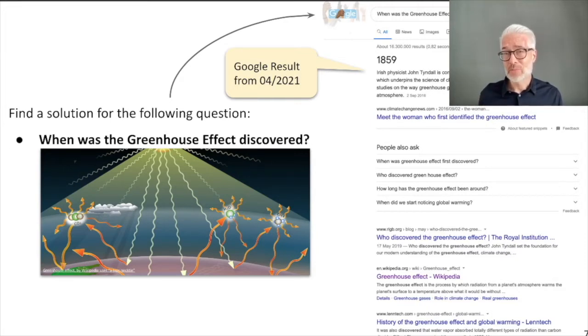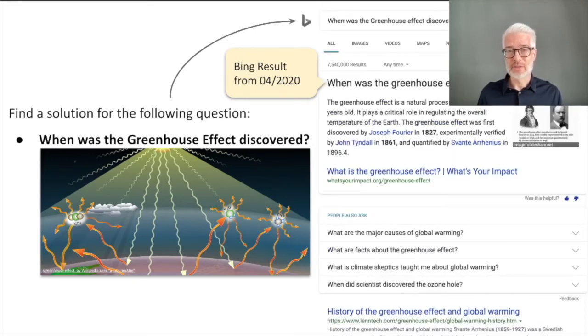You might become a little bit suspicious now and think, okay, let's verify this. There are more search engines on the web than just Google. Let's see what's happening at Bing, for example. When was the greenhouse effect discovered? Surprise surprise, again a different result. Here we see that the greenhouse effect was discovered in 1827, and not by John Tyndall or Svante Ahenius. It tells you it was discovered already by Joseph Fourier, more than 30 years earlier. Joseph Fourier, the mathematician and physicist who is also responsible for Fourier analysis.